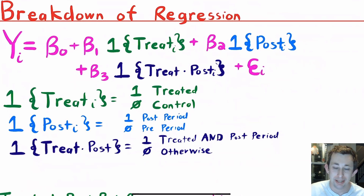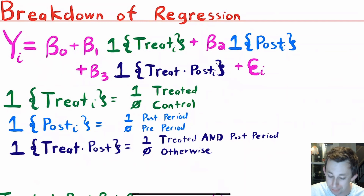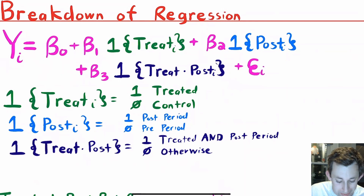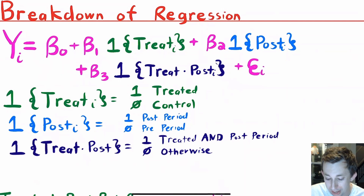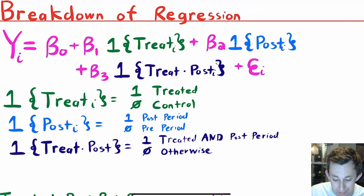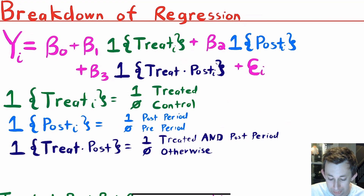Now let's talk about how we actually estimate this, because when we estimate a difference-in-differences we are hardly ever doing actual averages — most of the time we plug this into a regression. The regression looks like this: my outcome (stress level) is a function of these betas, where beta-zero is a constant; I include a variable called 'treatment,' which is one if I'm in the treatment group and zero if not; a variable called 'post,' which is one if we're in the post-period and zero if pre-period; and an interaction term 'treatment times post,' which is one if I'm in the treated group and it's the post-period, and zero otherwise.